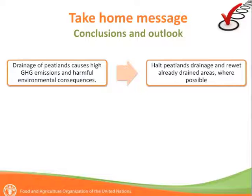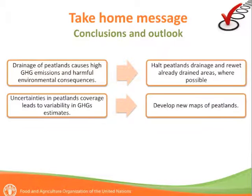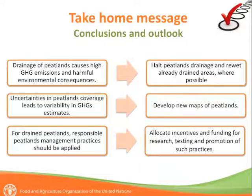Some take-home messages: Drainage of peatlands causes high greenhouse gas emissions and harmful environmental consequences, therefore it is important to halt peatlands drainage and rewet all drained areas where possible. Uncertainties in peatlands coverage lead to variability in greenhouse gas estimates, therefore it is important to develop new maps of peatlands. For drained peatlands, responsible peatlands management practices should be applied, and it is important to allocate incentives and funding for research, testing, and promotion of such practices.